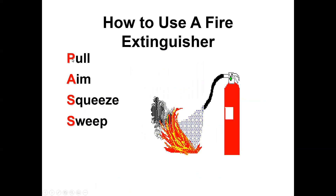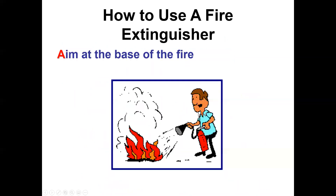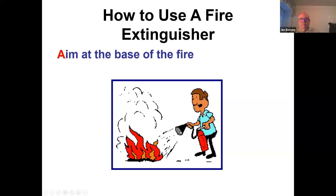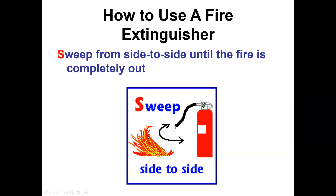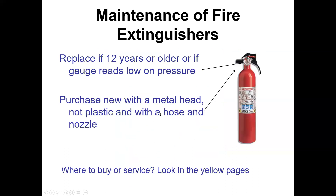The acronym for extinguisher use is PASS: Pull the pin, Aim the hose, Squeeze the handle to discharge, and Sweep the fire left to right — slowly, not rapidly — because you want to put the maximum extinguishing medium on the fire. Aim at the base of the flame, not the top. You can shoot into the flames all day and do no good. Sweep from side to side slowly until the fire is out.